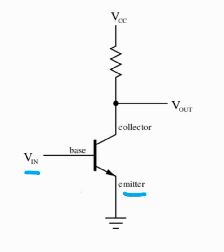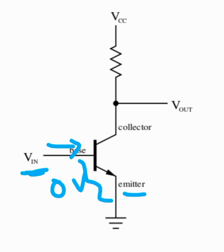The same circuit, along with operating as an amplifier, can also operate as a switch. When the input signal is 0 volts, the input side of the circuit is switched off, so essentially there is no current in the input side of the circuit, and therefore there is no current at the output side of the circuit.